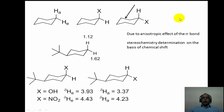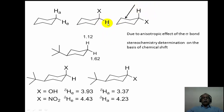We will now look at the use of chemical shift values in the determination of stereochemistry. Due to the anisotropic effect of the sigma bond, axial and equatorial hydrogens appear at different chemical shift values. The equatorial hydrogen is always at a higher delta value compared to the axial hydrogen because of the anisotropy of the carbon-carbon bond, easily reflected in the spectrum of tert-butyl cyclohexane, which does not undergo chair-to-chair interconversion.